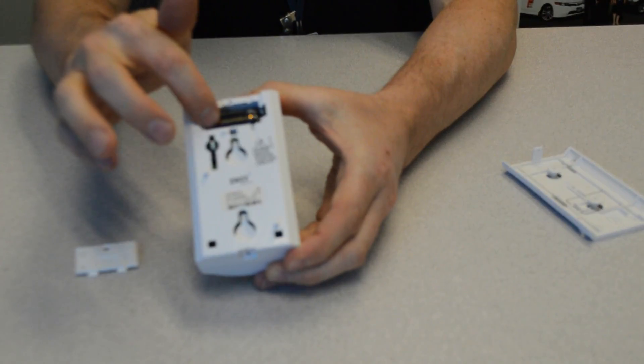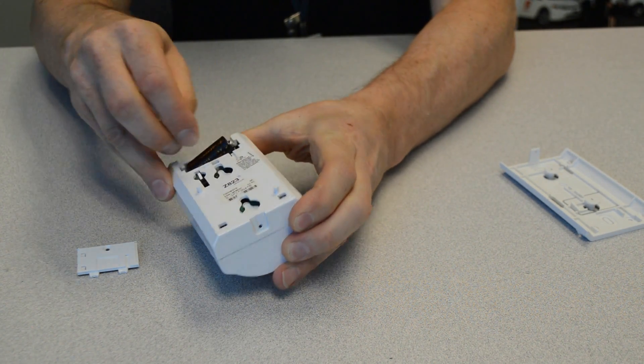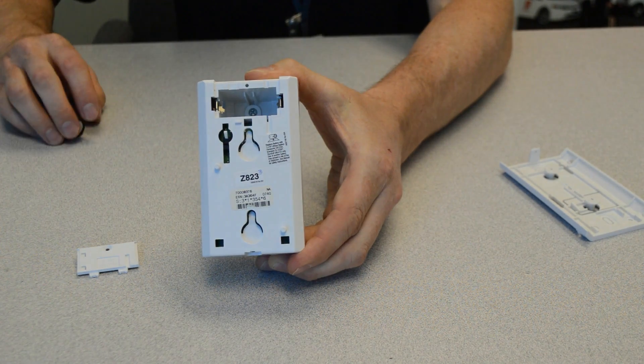Okay, so the CR123 right in there. You can use a little screwdriver or your fingernail. It should be fine to just pull that out.